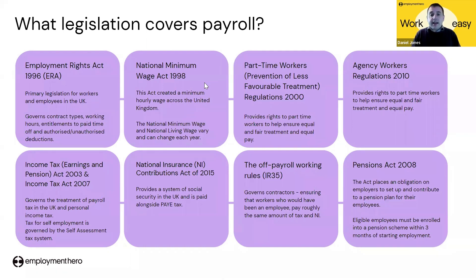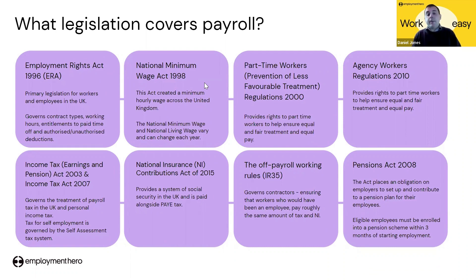We also have the National Insurance Act. This legislation provides a system of social security in the UK. National Insurance contributions over a number of years give employees entitlement to state benefits. When the employee is paid above a certain level, contributions are made both by the employee and employer. National Insurance is paid alongside PAYE. As an employer, you'll take it from the employee's wages before they get paid, and the amount paid will be shown on their payslip.